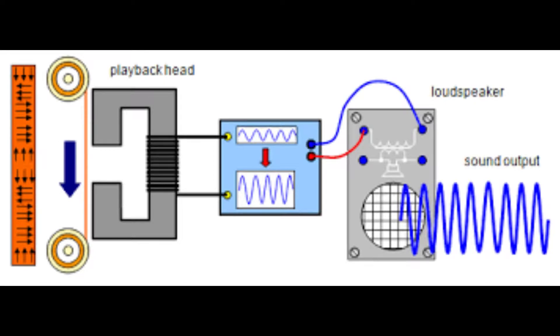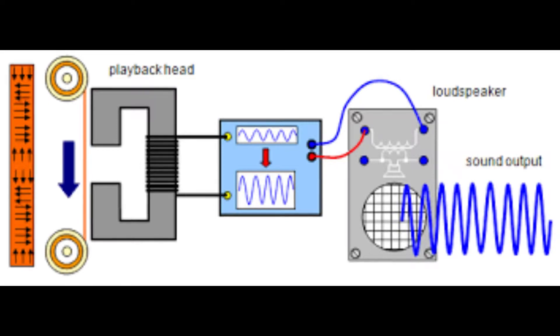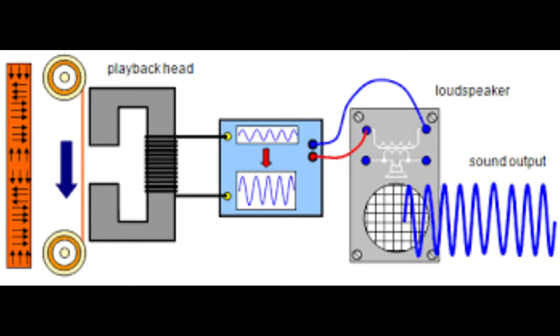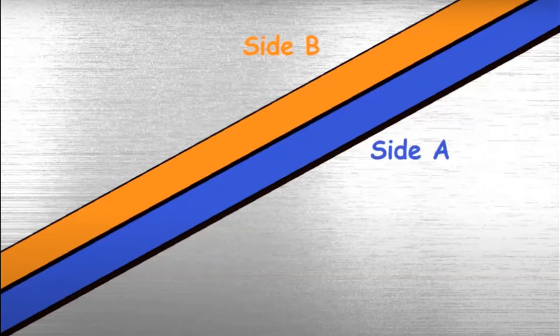The electric signal is now stored in the magnetic tape. While reading the tape, the exact opposite happens — the tape moves in the opposite direction and the magnetic signal on the tape generates a small current in the coil. This current gets amplified and sent to the speaker to reproduce the sound. The tape has two sides, side A and side B. If you are done listening to side A, you can switch to side B. Each side has two channels — one for the left audio and the other for the right audio. This feature comes into play when you use headphones. The average capacity is around 30 to 45 minutes per side.